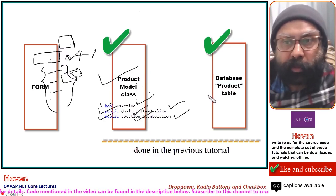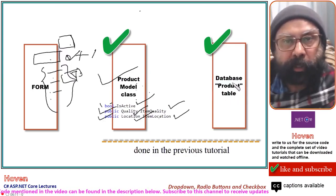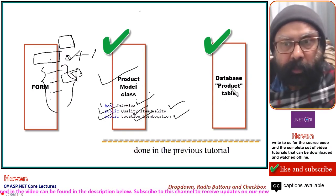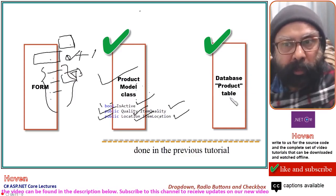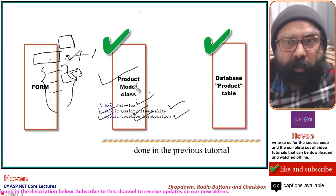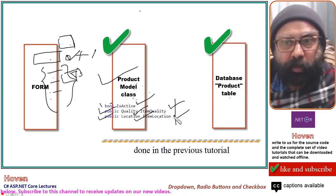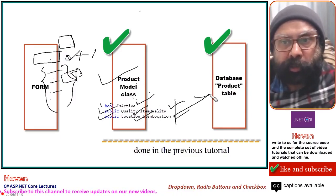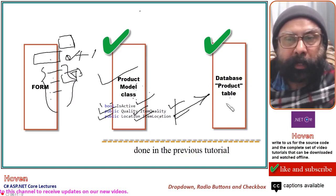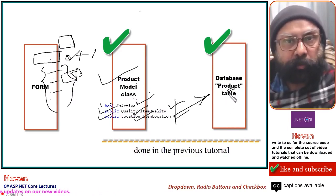We have also made corresponding changes to the database already. The product table of the database required modification. To the product model class we had to add three properties, and corresponding to these properties we had to add three columns to the table called product. This has also been done.